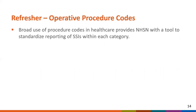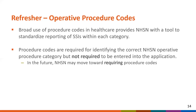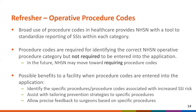NHSN operative procedure codes play an important role in SSI surveillance. The broad use of procedure codes in healthcare provides NHSN with a tool to standardize reporting of SSIs within each category. Procedure codes are required for identifying the correct NHSN operative procedure category but are not required to be entered into the application at this time. In the future, NHSN may move towards requiring procedure code entry within the application. Possible benefits include identifying specific procedures or codes associated with increased SSI risk, tailoring prevention strategies to specific procedures, and allowing precise feedback to surgeons based on specific procedures.